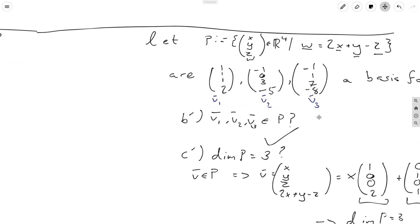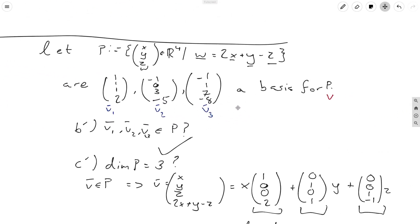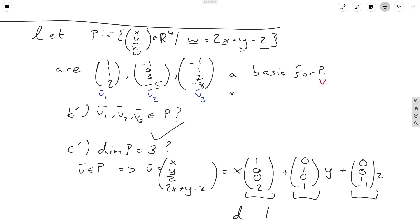Now, let's hop over here and talk about a little more of a difficult problem. So suppose P is equal to the set of (x, y, z, w) in R⁴ such that the fourth coordinate w is equal to 2x + y - z. Now I'm giving you three new vectors in four dimensions, and I'm asking you if they are bases for P.